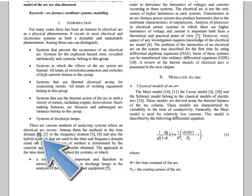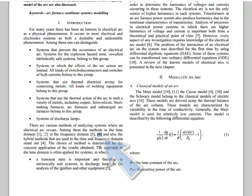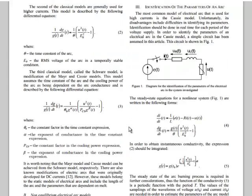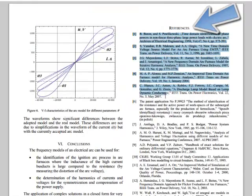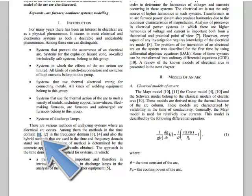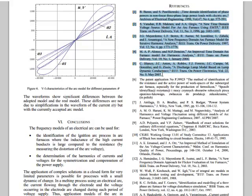The first source cited is listed as number one, the second is number two, the third is three, the fourth is four, and the fifth is five. At the end of the work, the references are listed in order of appearance. The works aren't alphabetized, but simply listed in order of appearance.